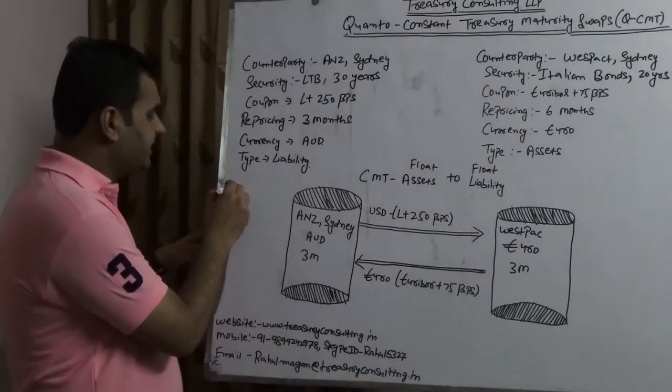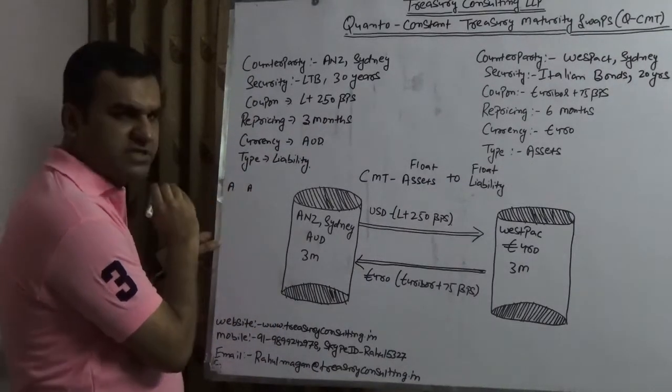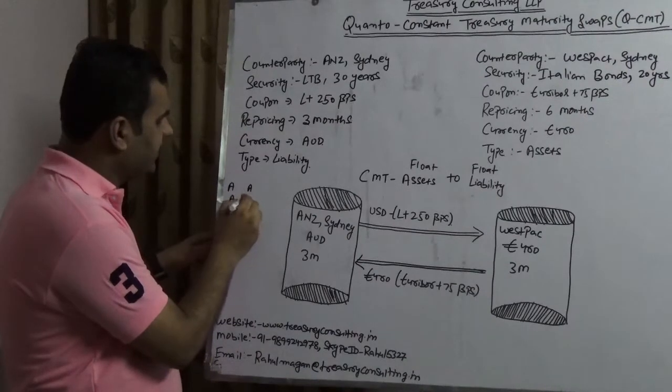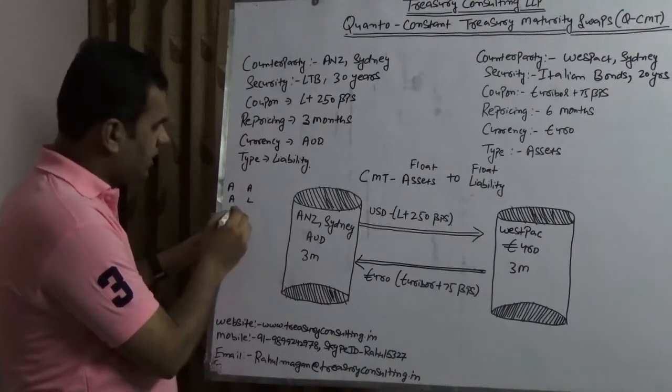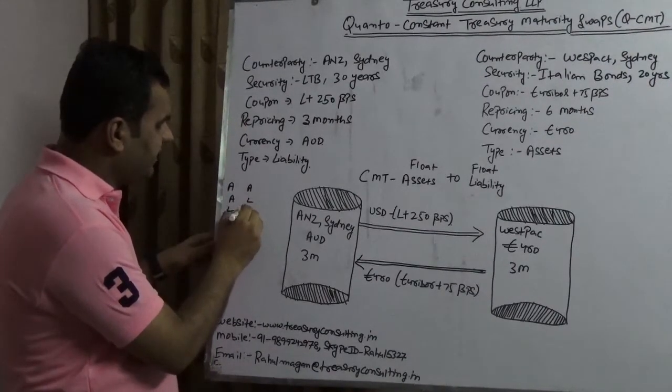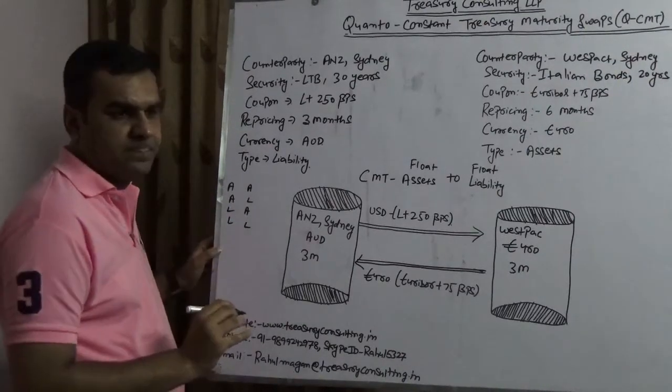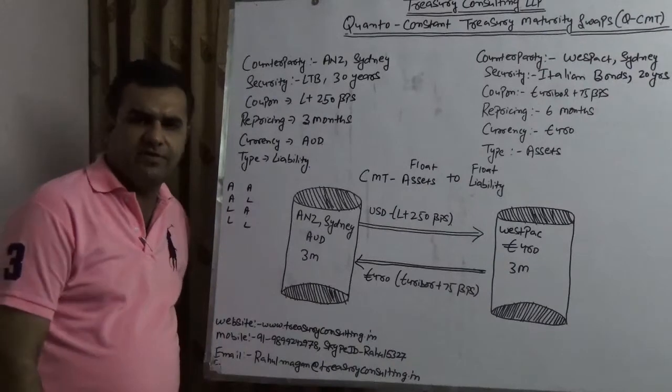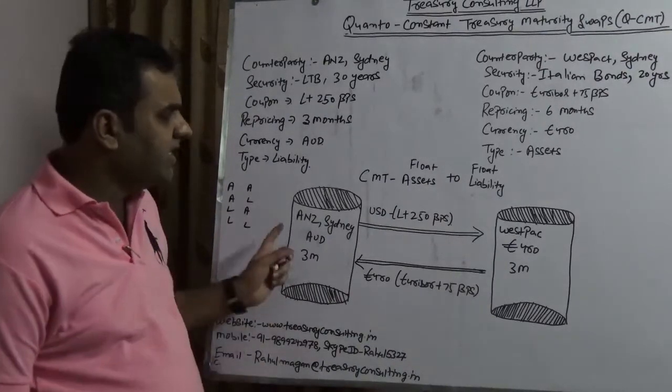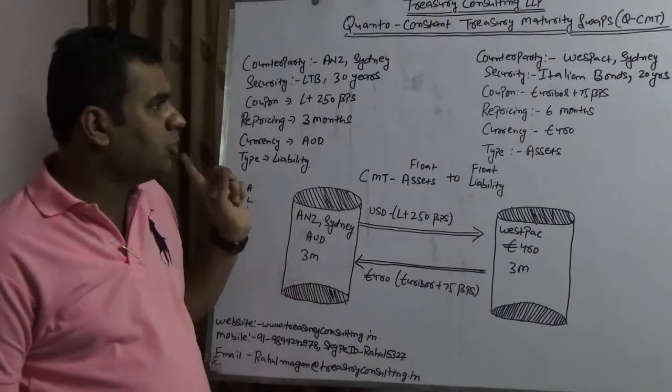Number one, when you have an asset here and you have asset on the other side. When you have asset here, you have a liability on the other side. When you have a liability on one side, you have asset on the other side, and when you have a liability and a liability. These are the four ways it can be configured. Here it's again an example of that, but this time is a Quanto CMT.